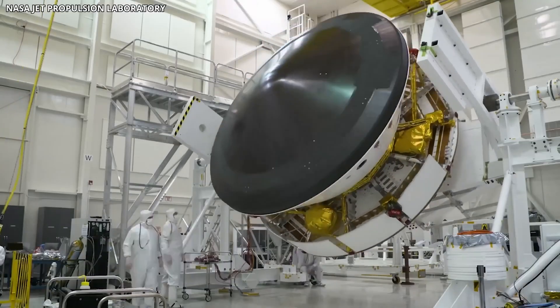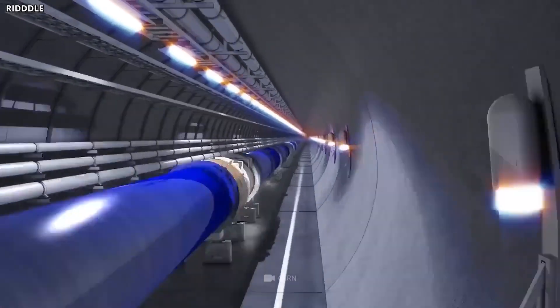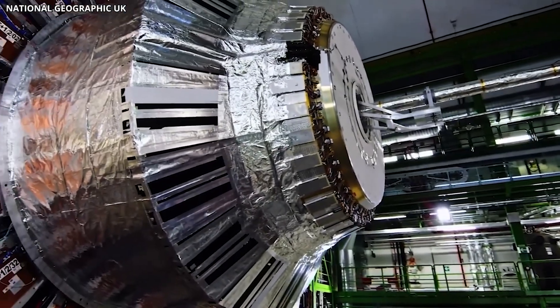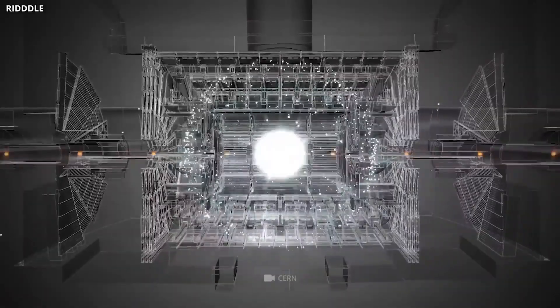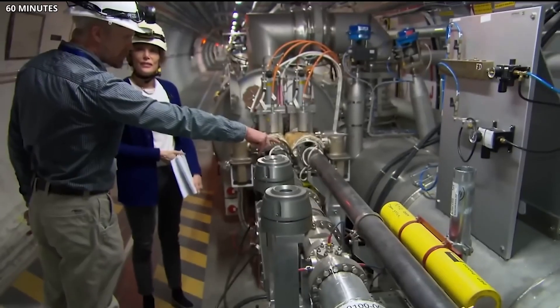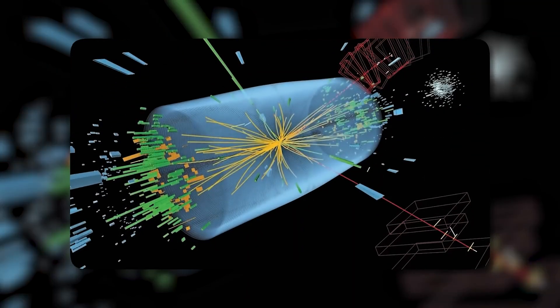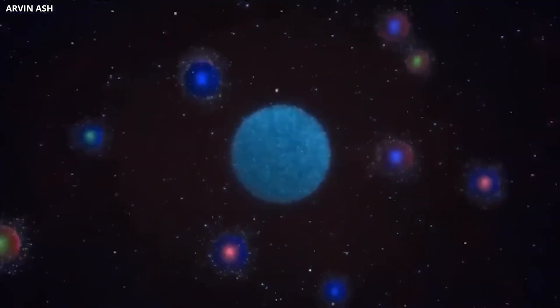Now fast forward to today, where the world's smartest people built one of the most insane machines ever to solve this mystery. The Large Hadron Collider, or LHC, buried deep under the ground at CERN. This machine is gigantic. It smashes protons together at almost the speed of light to recreate the first seconds after the Big Bang. It's in these tiny insane collisions that scientists can study the building blocks of everything.